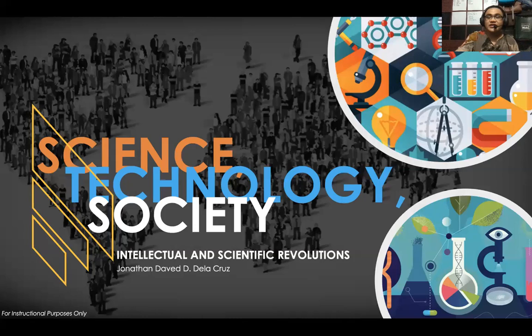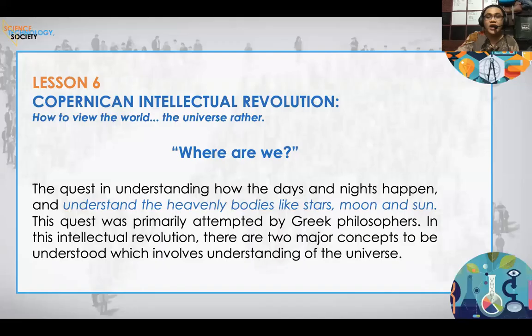Let's jump into the first lesson of Chapter 2 on intellectual and scientific revolutions. This is Chapter 2, Lesson 1 — but since it is a continuation of the previous chapter, this is Lesson 6 overall — called the Copernican Intellectual Revolution.